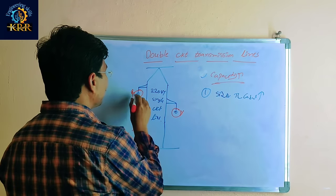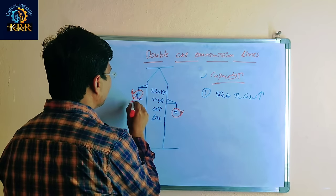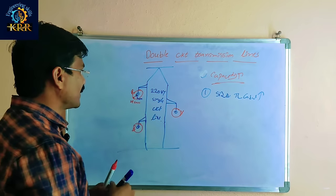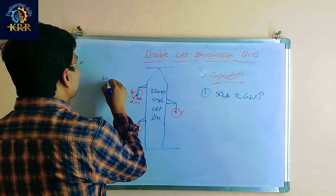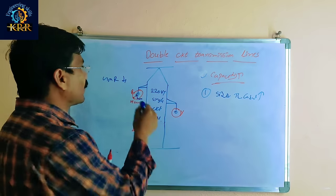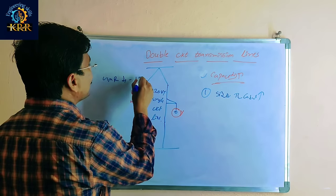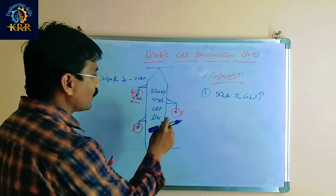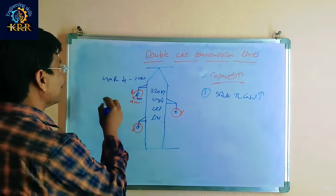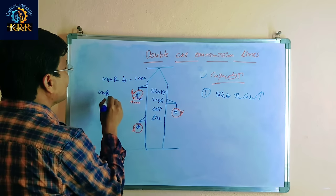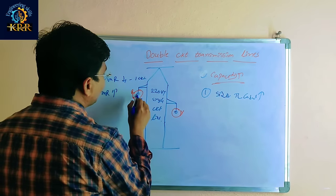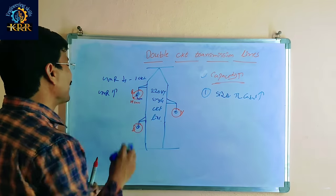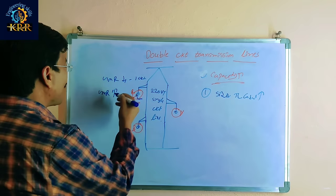Previously the radius was 2 cm. Now the radius is 4 cm. In the single circuit line, GMR was less. If we increase the size of the conductor, the GMR is also increasing — previously radius was 2 cm, now it is 4 cm, so obviously the GMR is increasing.